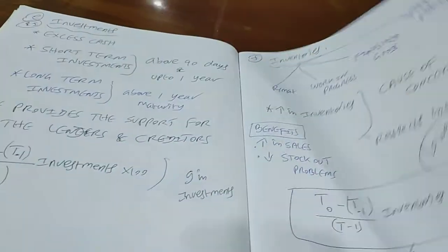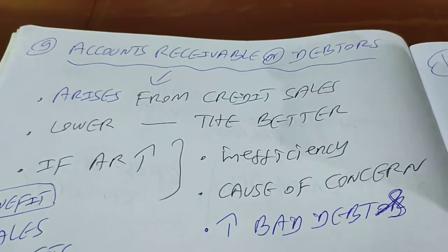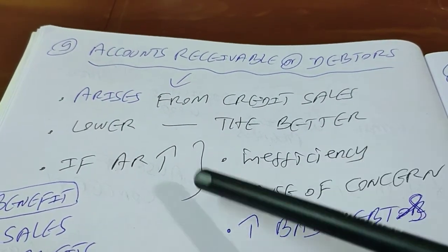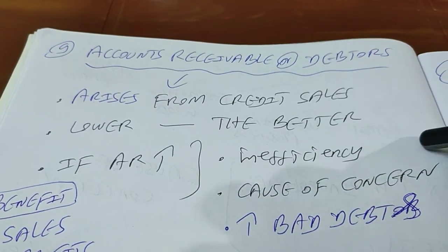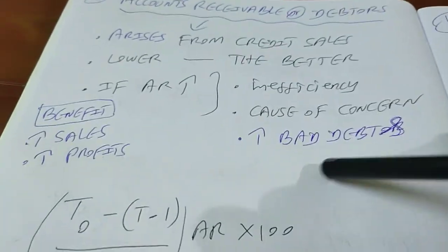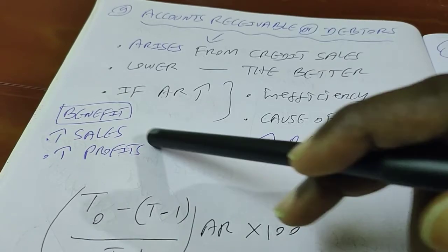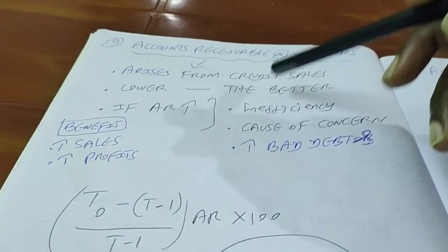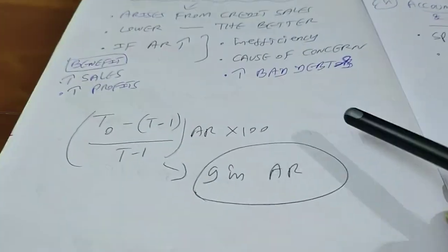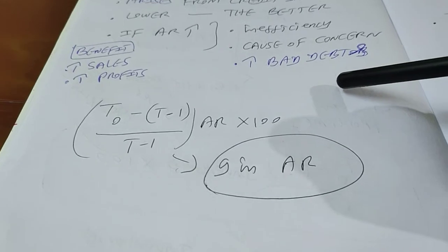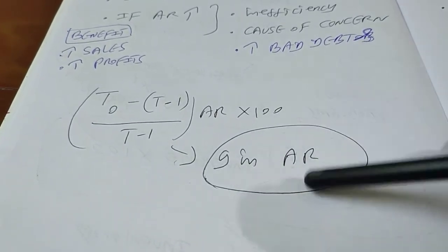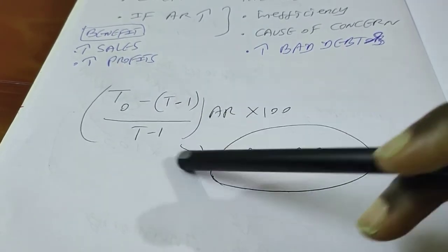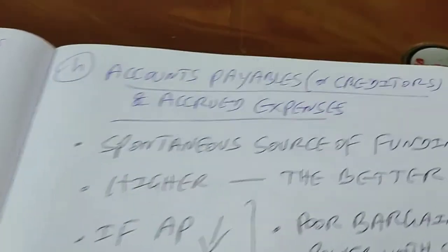The next important current asset is accounts receivable, otherwise known as debtors, arising from credit sales. This also comes under the rule of lower the better. If accounts receivable increases, it indicates inefficiency in collection and may lead to increased bad debts — a cause of concern. It may also suggest increased sales revenue and profits, but the growth rate in AR: (AR at t0 minus AR at t-1) divided by AR at t-1, multiplied by 100, should ideally be low.